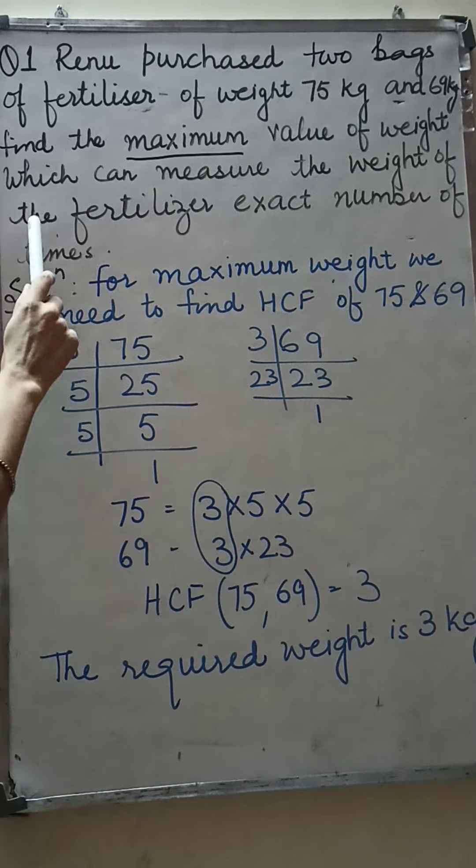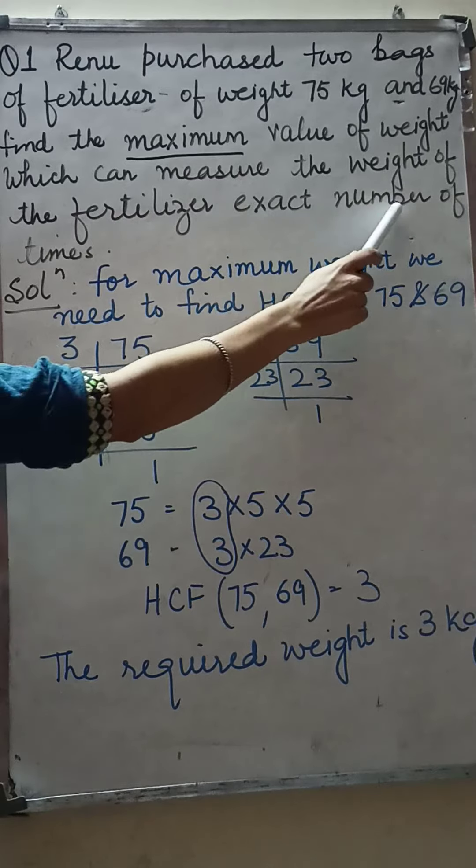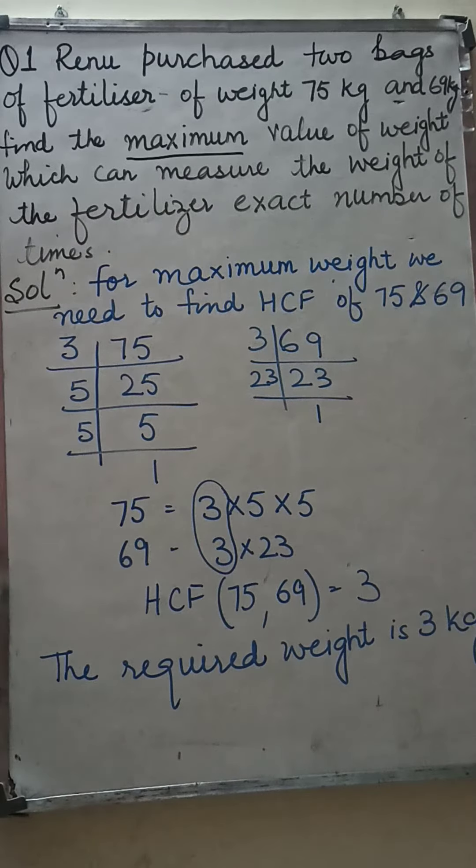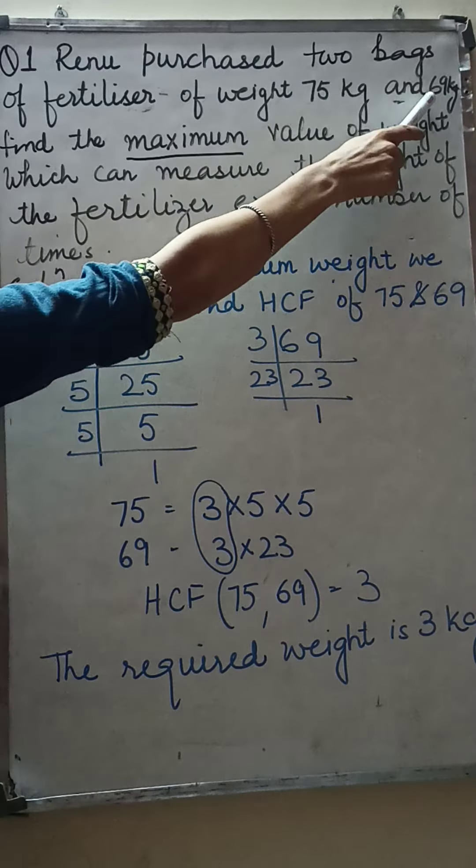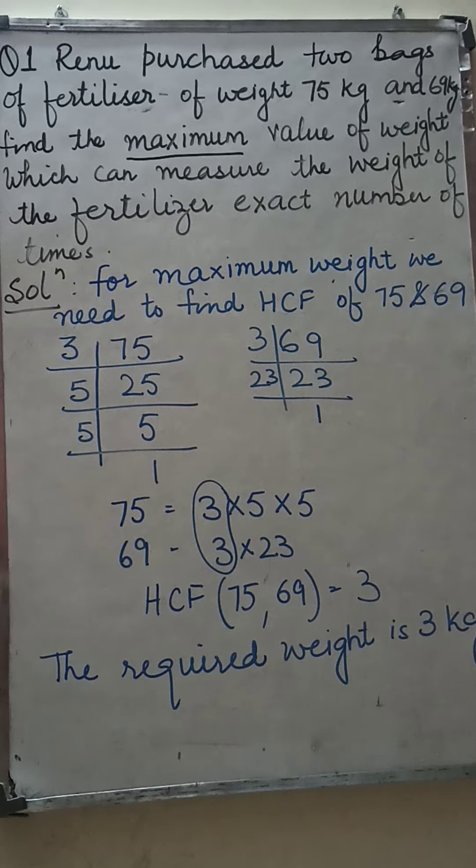of the fertilizer exact number of times. When we measure this 75 kg there is no remainder. When we measure this 69 kg there is no remainder.